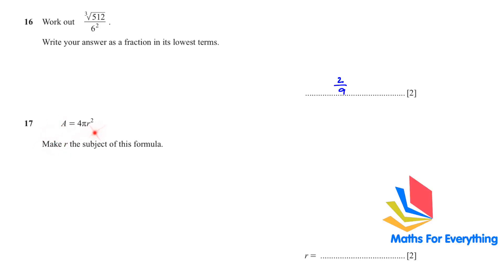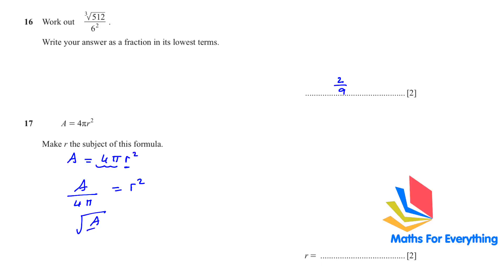Question 17: A = 4πr². Make r the subject. Divide both sides by 4π, leaving r² = A/(4π). To remove the square, take the square root of both sides, giving r = √(A / 4π).